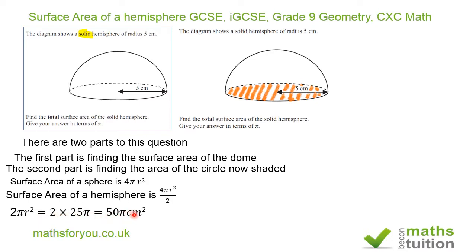I have to point out that this question carries three marks. The first mark is to find the surface area of the hemisphere itself. The second part is to find the area of this circle. And the third part is to make sure that you state the units of area — in this case, centimetres squared. If you don't put that down, you lose that mark.